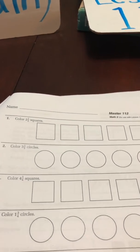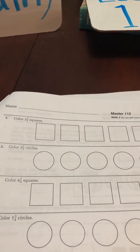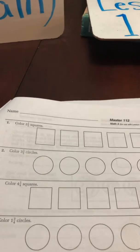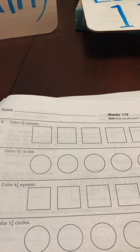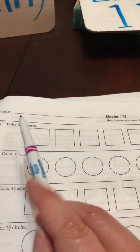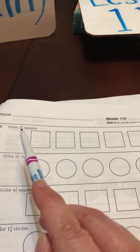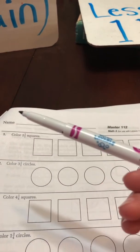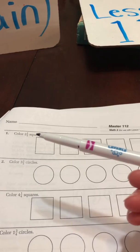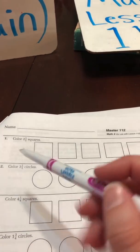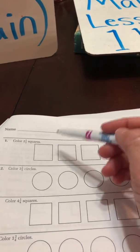On this worksheet, instead of writing the mixed numbers, we're actually going to color the mixed numbers that are given. So, oh, it looks like my old friend, two and a half. I opened the marker this time before I started filming, but I did still use my teeth. So we need to color two and a half squares as well.